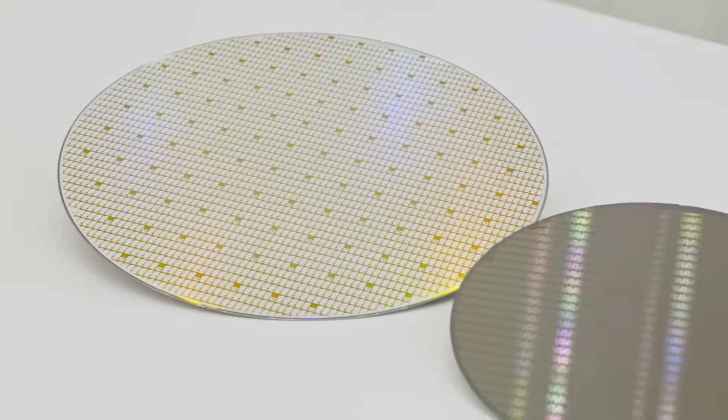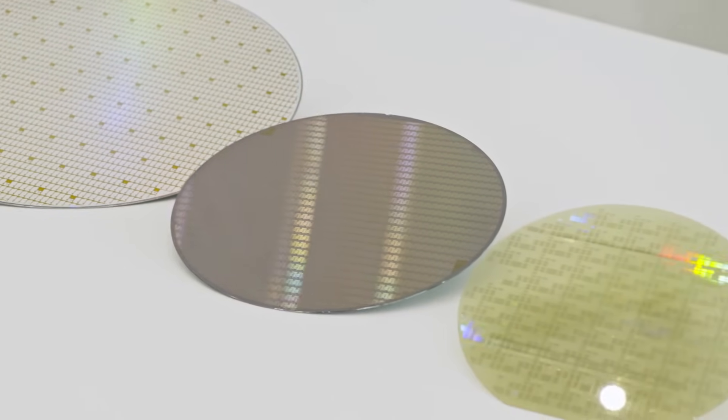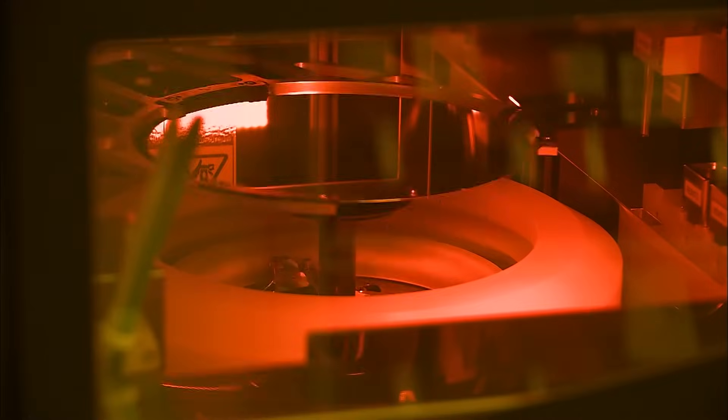In our clean room, up to 35,000 chips are then made from each of these disks. In numerous process stages, the wafers are given their characteristic surface structure.